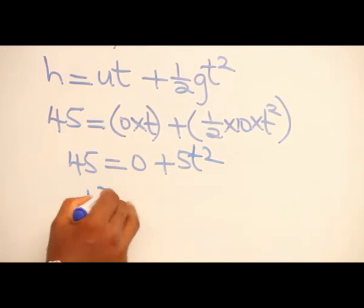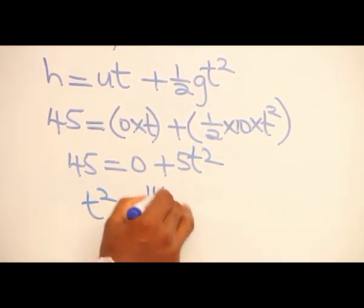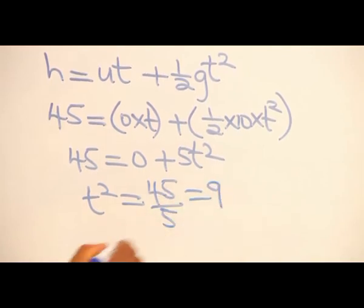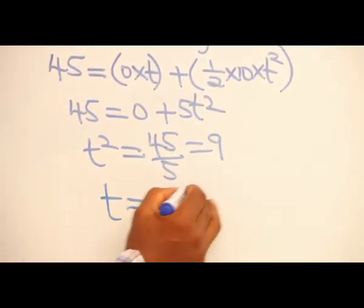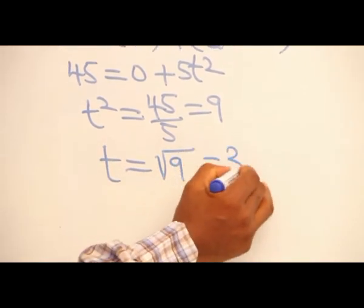Therefore, t² = 45/5 = 9. The time to reach the ground is square root of 9, which is 3 seconds.